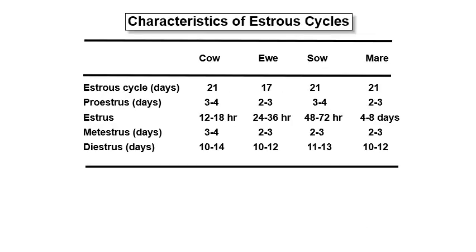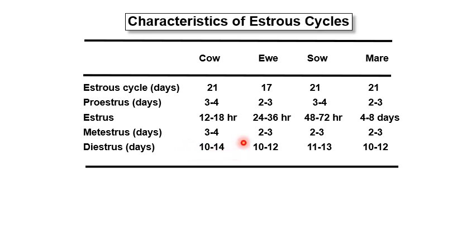This is a summary of the characteristics of the estrous cycle of the cow, ewe, sow, and mare. All have a 21-day estrous cycle except the ewe, which is 17 days. The table also shows proestrus (in days), estrus (in hours), metestrus (in days), and diestrus (in days). Proestrus and estrus constitute the follicular phase, while metestrus and diestrus constitute the luteal phase. The longest stage is the diestrus and the shortest is the estrus stage.